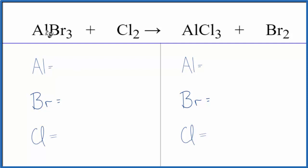Let's count the atoms up. One aluminum atom, three bromine atoms, and two chlorine atoms. Product side, one aluminum, two bromine atoms, and three chlorine atoms.